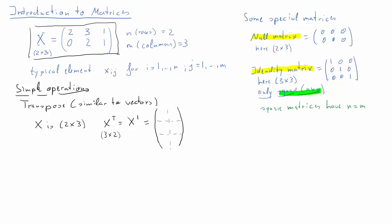How do we translate the elements from the X matrix to the X prime or X transpose matrix? The first row will become the first column: 2, 3, and 1. And the second row will become the second column: 0, 2, and 1. So that's a very common, very useful and important operation we can undertake with matrices.